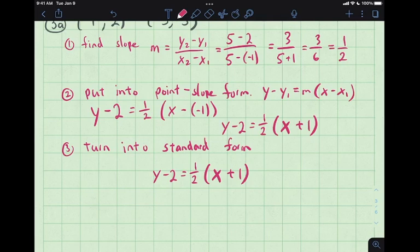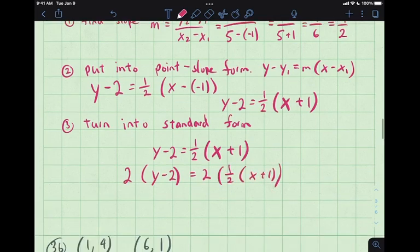Turn into standard form. I guess the most algebra-heavy step. So, just like from the earlier problems, I'll just copy this thing. Paste it here. This is what I'm working with. So, I'm going to multiply both sides by 2. Y is 2. That's the denominator. 1 half x plus 1. Probably going to have a space. 2y minus 4. That's the distributive property.